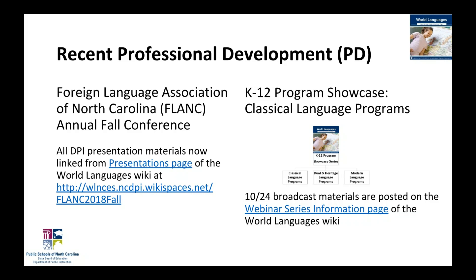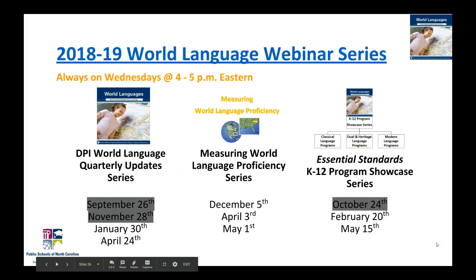Also in October, right after the FLANC Fall Conference, we had a webinar in the K-12 Program Showcase series focused on classical language programs, on October 24th — broadcast materials are posted on our webinar series information page. Our World Language Webinar series continues: the next webinar on December 5th is in the Measuring World Language Proficiency series, focused on credentialing and our Global Languages Endorsement. After that, January 30th will be another World Language Quarterly Update, and February 20th will be another K-12 Program Showcase webinar. All dates and registration links are available on our World Language Information page for webinars.